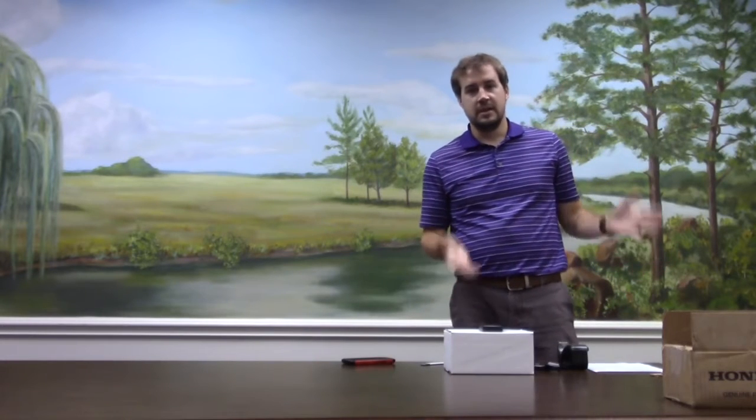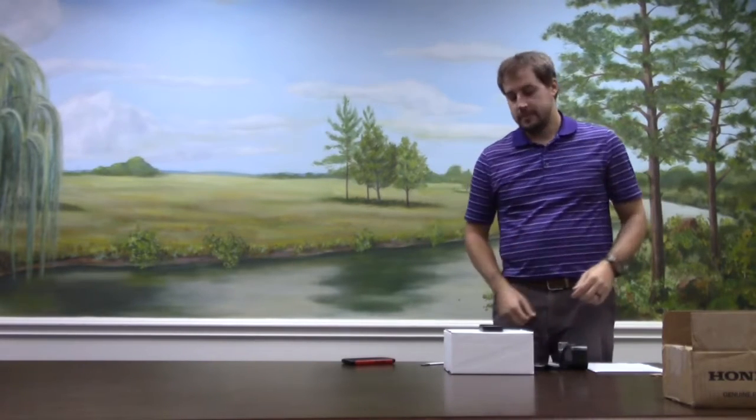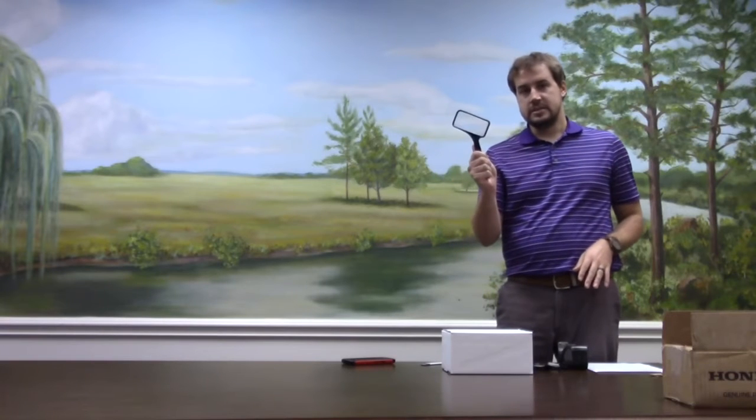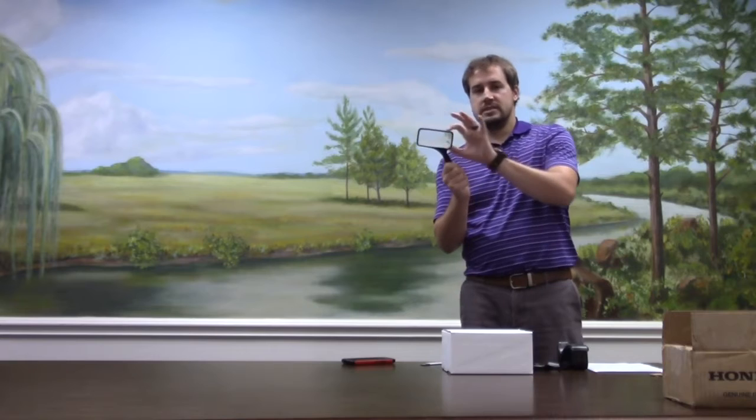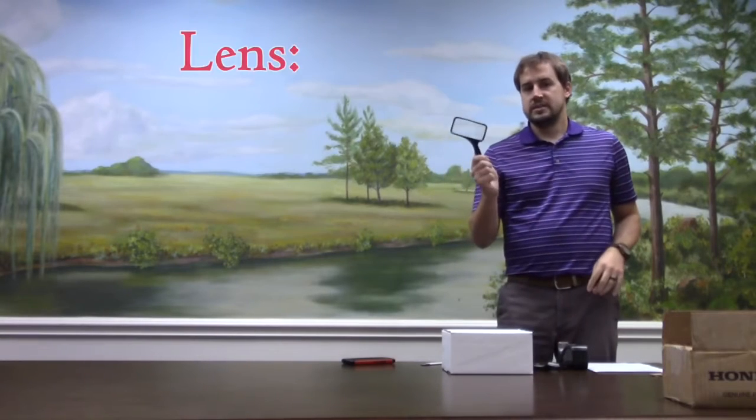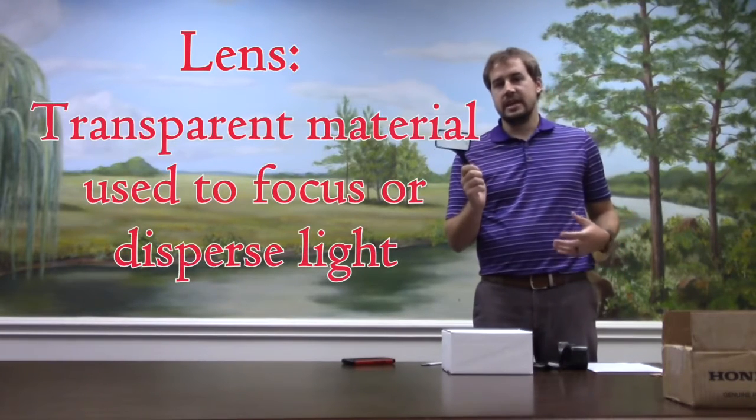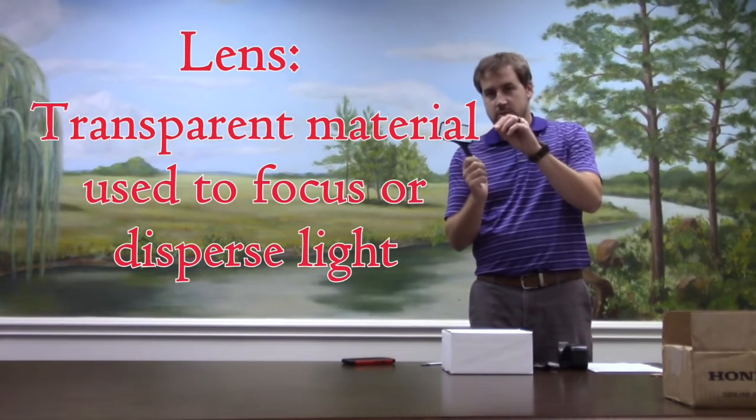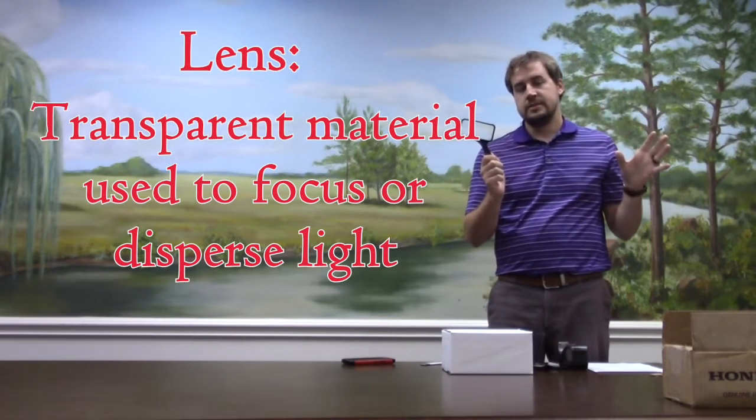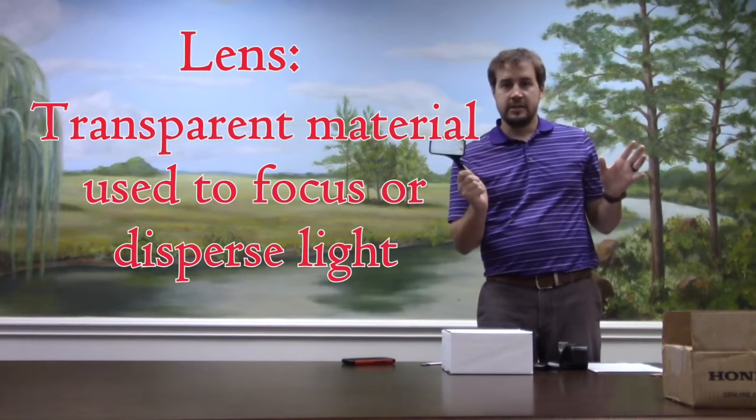Now, how in the world does all of this help us make a smartphone projector? Well, the way we project things is through what is called a lens. Now, this is a magnifying glass and the inside glass part is a lens. A lens is any transparent object used to focus or disperse light. In other words, refract the light. Now, we have two types of lenses.